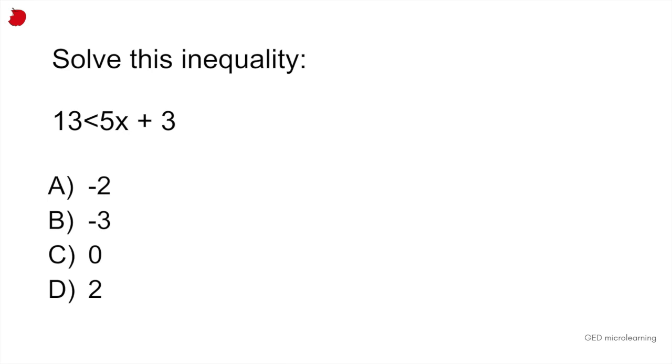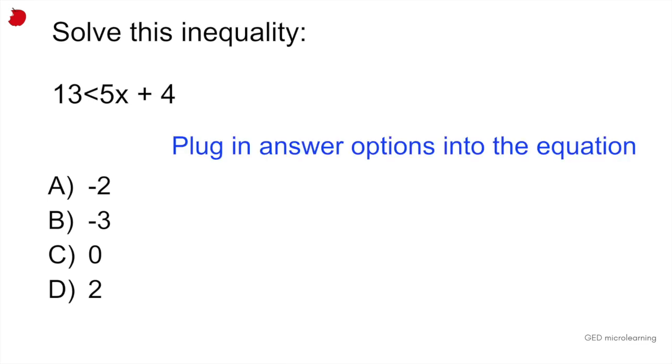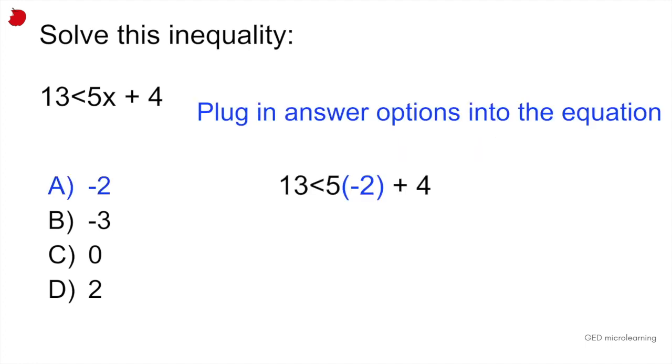So if we start with A, which is minus 2, you would take that minus 2 and plug it in where the X is. So you have this formula that gives you minus 10 plus 4 on the right side, which is equal to minus 6. So 13 is not less than minus 6. So that tells you that option A is incorrect.